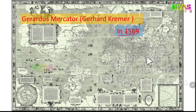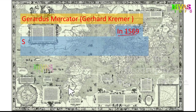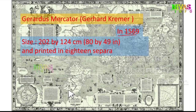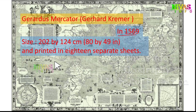This was created in 1569. This map is size 202 by 124 centimeters — 202 wide and 124 in height. That is 18 inches by 49 inches. This map represents 18 separate sheets.